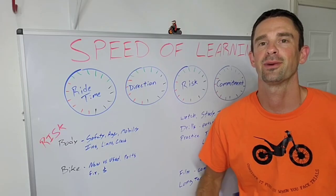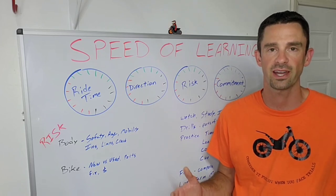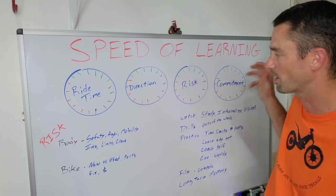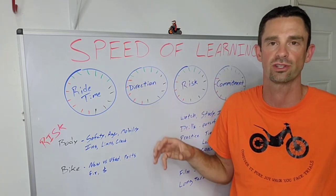The way I like to think about this is almost like you've got four different dials that you can turn up in order to maximize your effectiveness. So right now I've got ride time, direction, risk, and commitment as different things that you can adjust. You can turn them up or down so to speak.